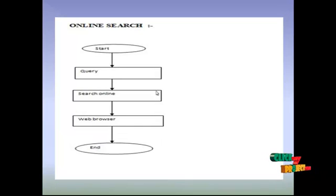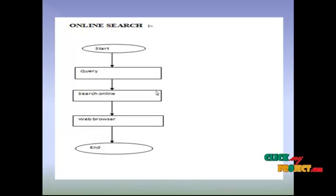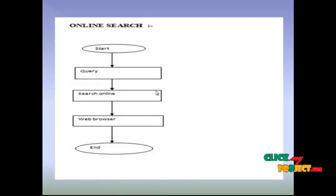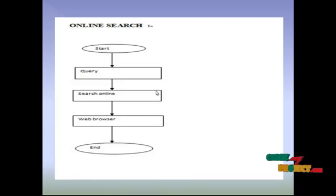The next one is online search. Online search is a standard web search — if the user writes a query, we search the query online through a web browser component in our Windows form application.